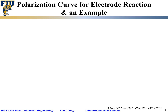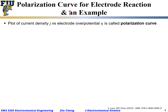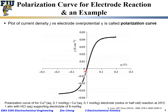Now let's look at an example of a so-called polarization curve for an electrode reaction. A polarization curve is a plot of current density j versus electrode overpotential eta. Here we show an example of such a polarization curve, with j for current density on one axis.